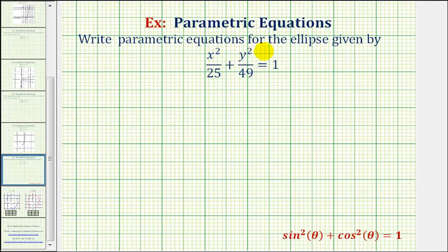We want to write parametric equations for the ellipse given by x squared divided by 25 plus y squared divided by 49 equals 1.